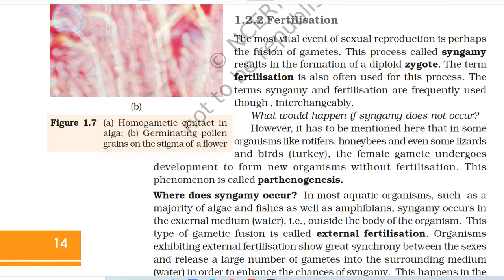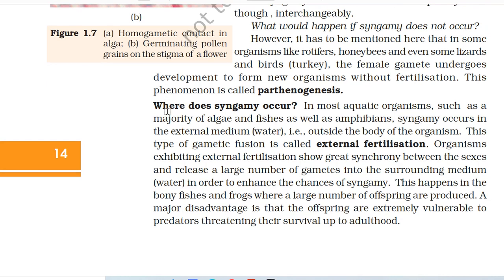Fertilization: The most vital event of sexual reproduction is the fusion of gametes. This process, called syngamy, results in the formation of a diploid zygote. The term fertilization is also often used for this process. However, it has to be mentioned that in some organisms like rotifers, honeybees and even some lizards and birds such as turkey, the female gamete undergoes development to form new organisms without fertilization. This phenomenon is called parthenogenesis.